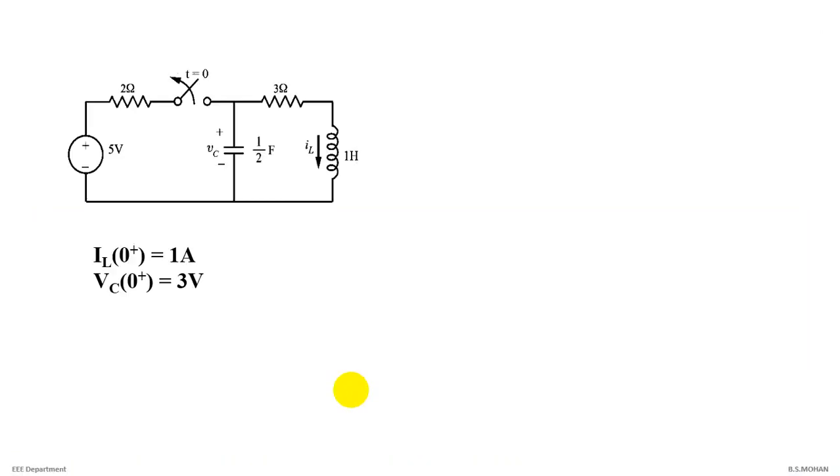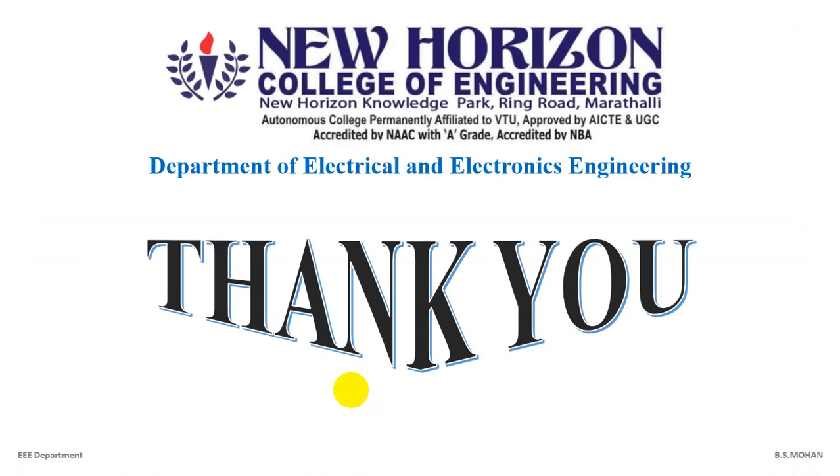So simulation results: we have calculated IL(0-) as 1 ampere and VC(0+) as 3 volts. We have simulated this and verified the answers are the same for switching action of this transient circuit. Thank you.